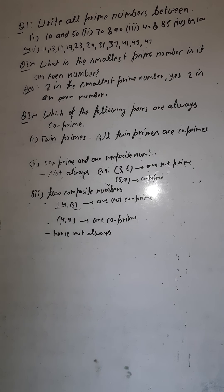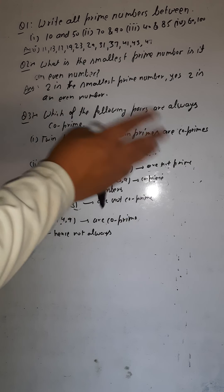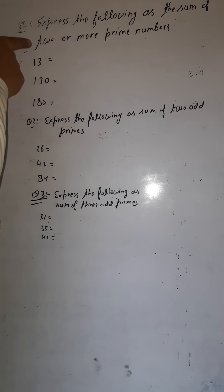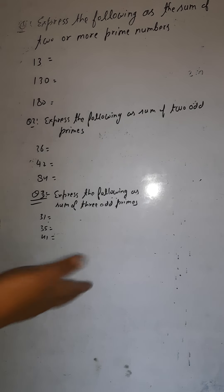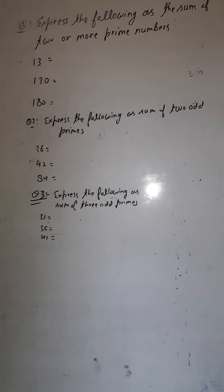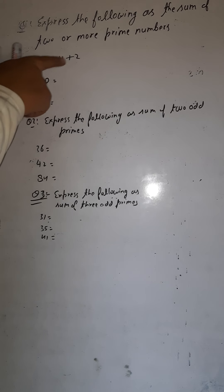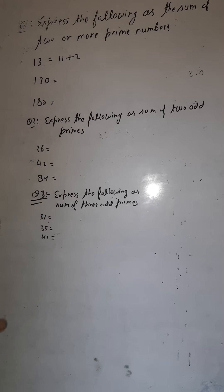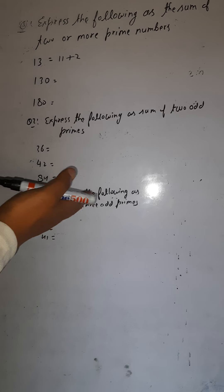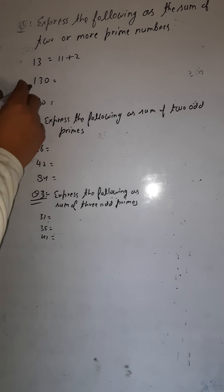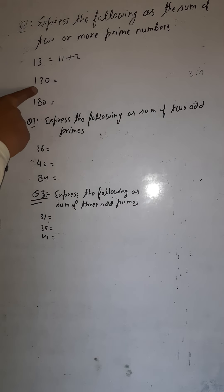Next question: express the following as the sum of two or more prime numbers. Express 13 as the sum of two or more primes. I can write 13 as 11 plus 2 — both 11 and 2 are prime numbers, and adding them gives 13. You can also write three or more numbers as long as all are prime.